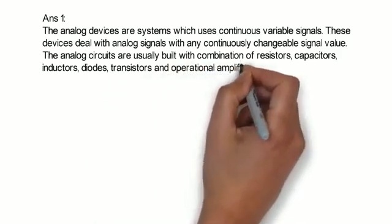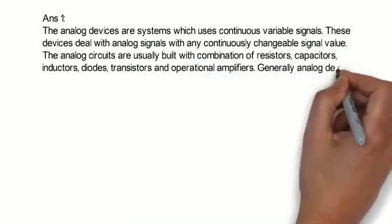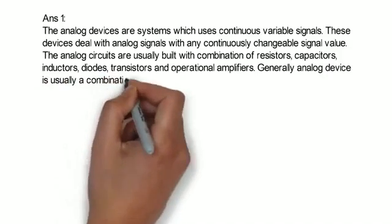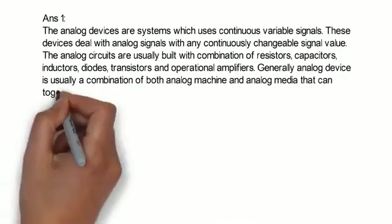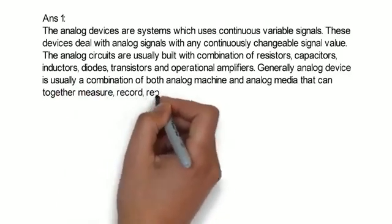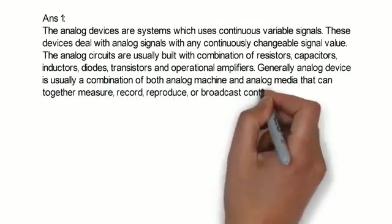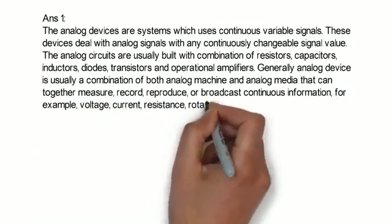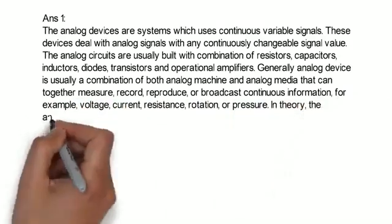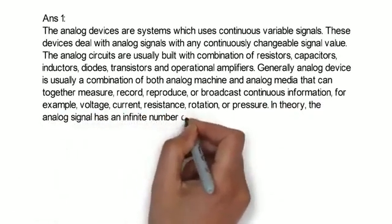Generally, an analog device is usually a combination of both analog machine and analog media that can together measure, record, reproduce, or broadcast continuous information. For example, voltage, current, resistance, rotation, or pressure. In theory, the analog signal has an infinite number of possible values.